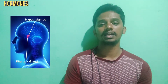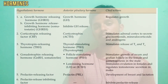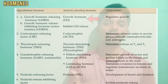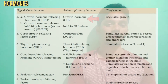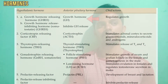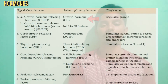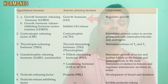So what are the hormones of the anterior pituitary? One of the major hormones is growth hormone. As the name indicates, the function of this hormone is growth — it stimulates most of the tissues to grow. That is the simple function of growth hormone.